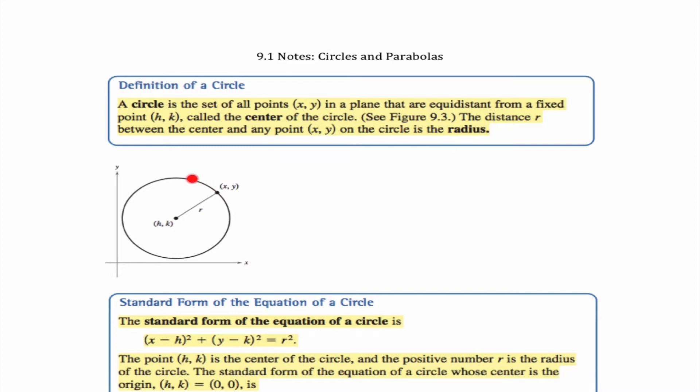So with the circle, obviously this is a circle. The definition is it is the set of all points (x, y) in a plane that are equidistant from a fixed point, the center, which is (h, k). The distance that they are away from the center is what we call r, which is the radius.